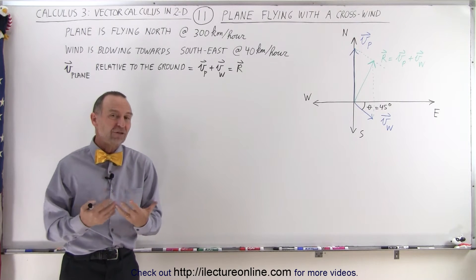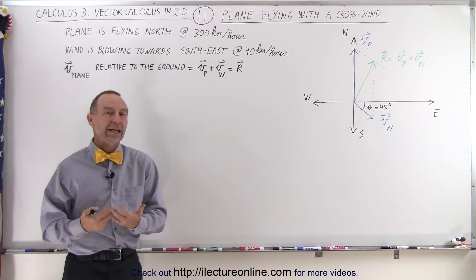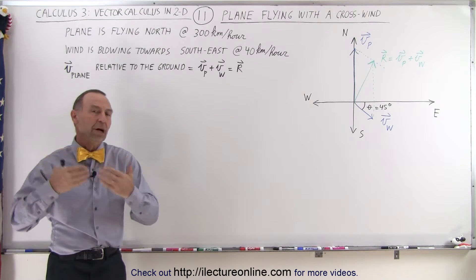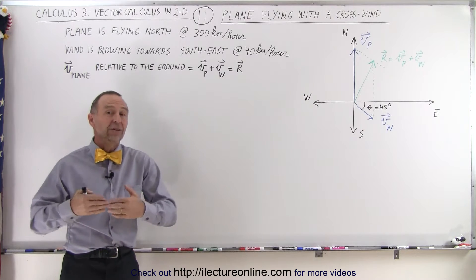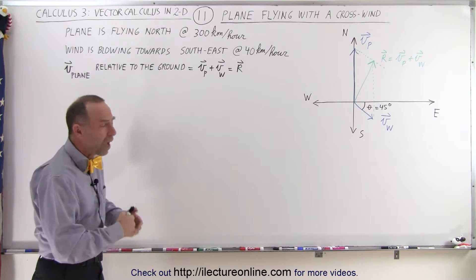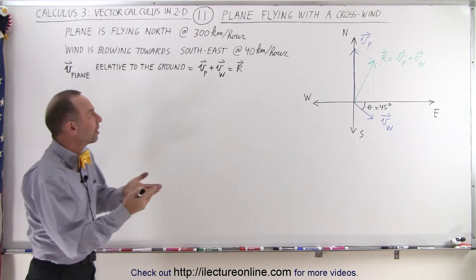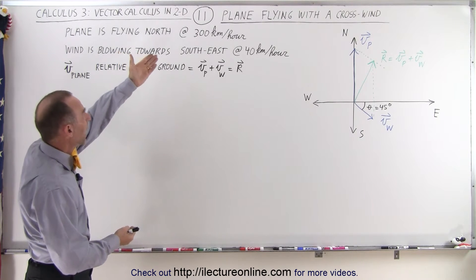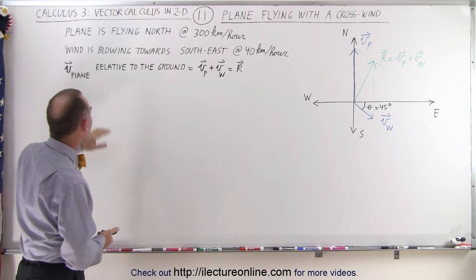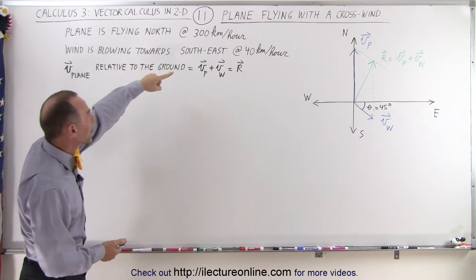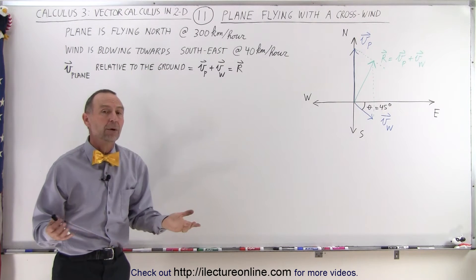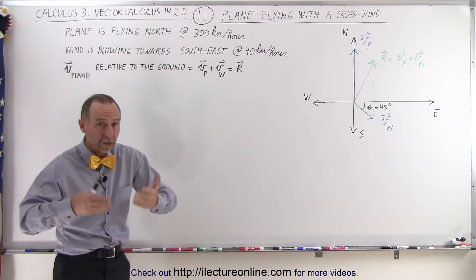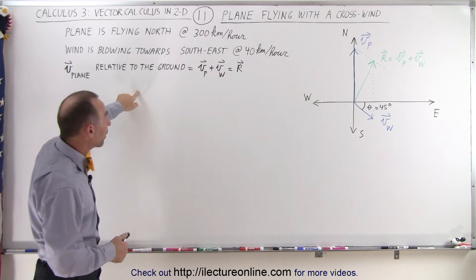A good application for adding vectors together is the case where a plane is flying through the air and there's a wind coming from some other direction. Here's an example where a plane is flying north at 300 kilometers per hour and there's a wind blowing towards the southeast at 40 kilometers per hour. What is the velocity of the plane relative to the ground?